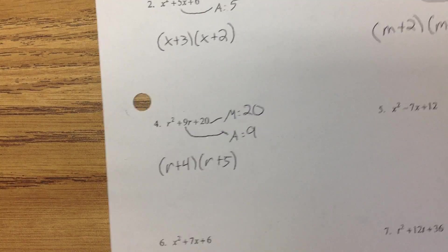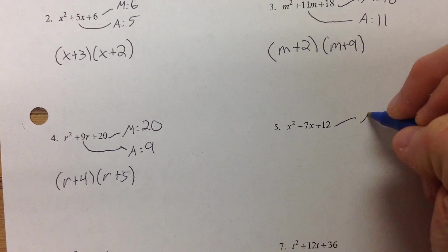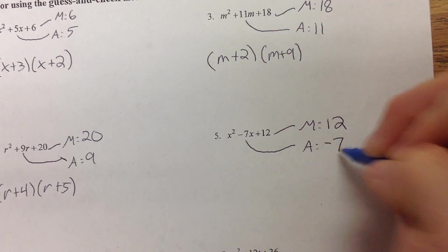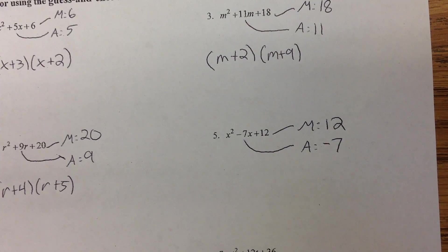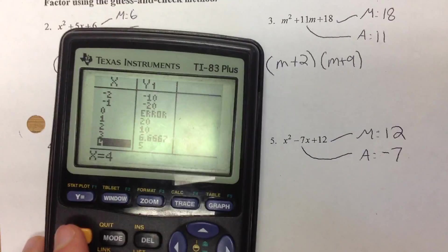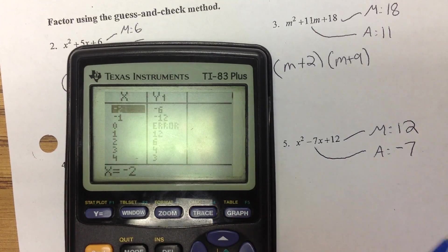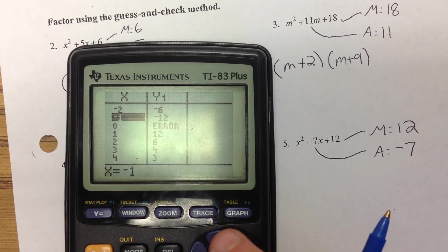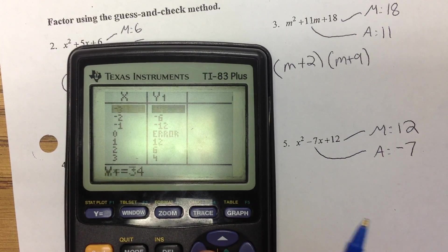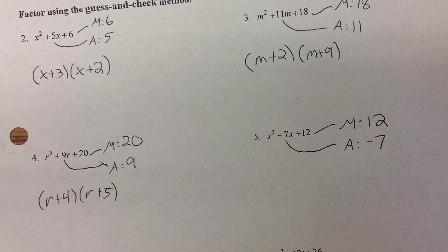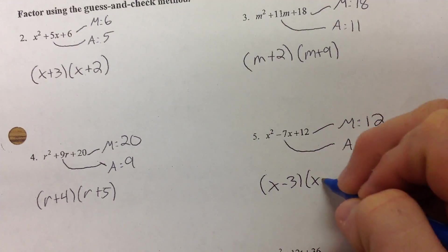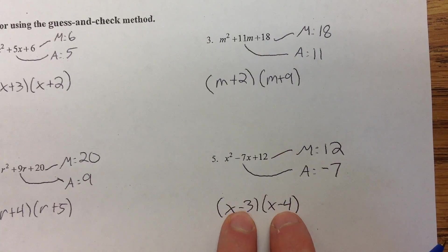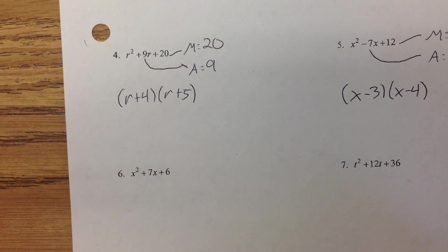Number 5 is a little different. We're still multiplying to a positive 12, but we're adding to a negative 7. When I put it in the calculator, I still put in 12 divided by x, but instead of using positive numbers, I'm going to use negative numbers because I have to add to negative 7. Negative 1 and negative 12 — nope. Negative 2 and negative 6 — nope. Negative 3 and negative 4 — yes, those add to negative 7. So this is x minus 3 times x minus 4. A negative times a negative is a positive, but a negative plus a negative is still negative.